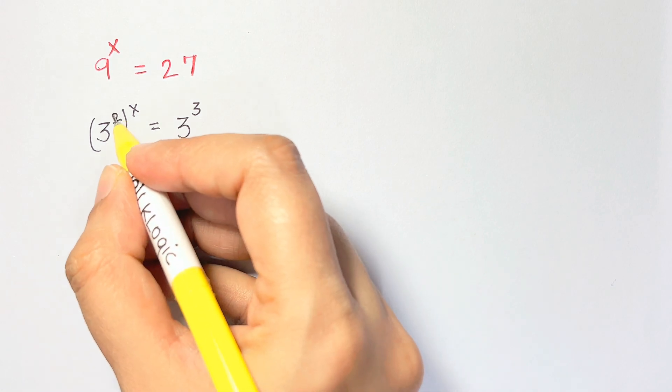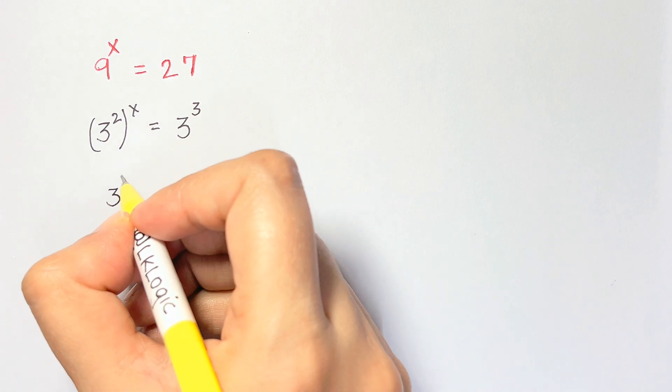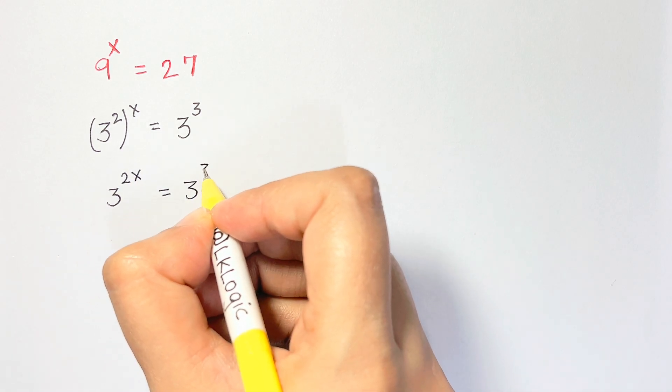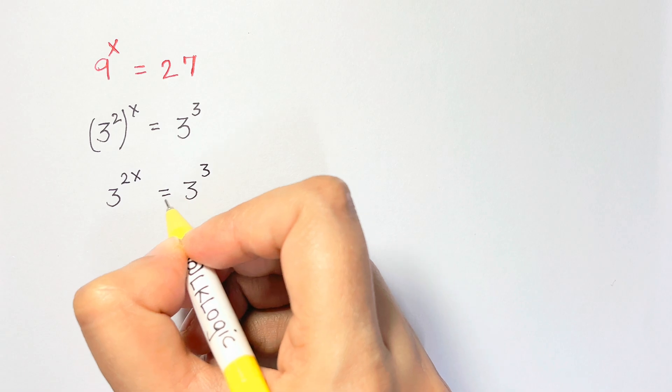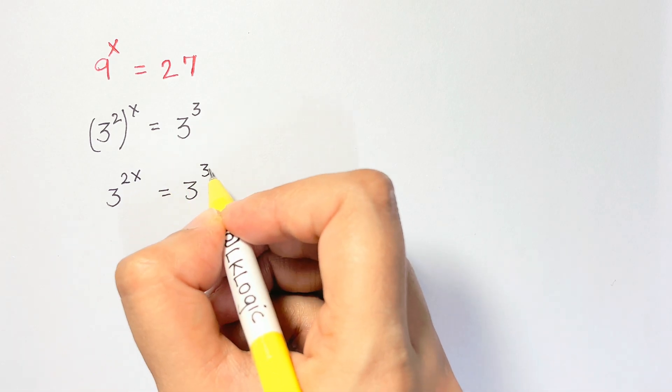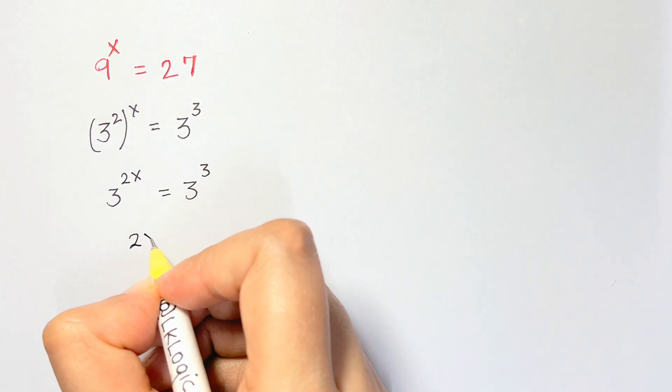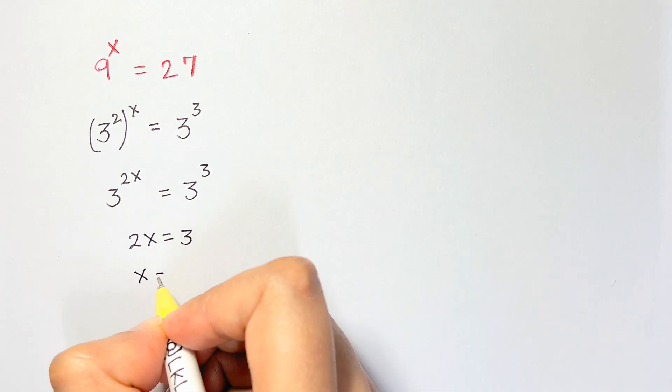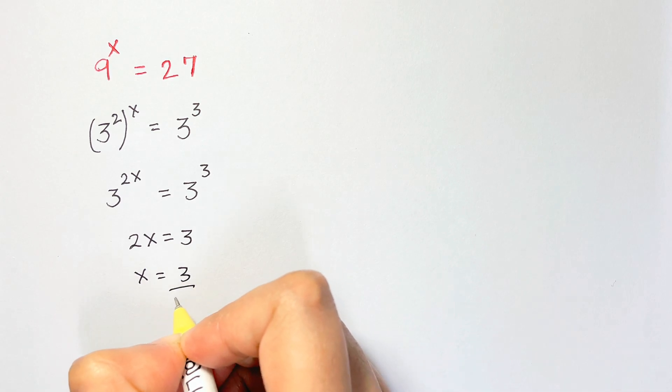And now here, whenever you have power to power, you multiply the powers. So 2x equals 3. Now whenever you have the same base and there's an equal sign between them, you can equate the powers. Here you have 2x equals 3, so x is equal to 3 over 2.